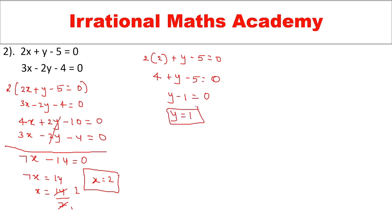Here 4 minus 5 is minus 1, so minus 1 plus y equal to 0, therefore y equal to 1. So I got x equal to 2 and y equal to 1. You can eliminate x also — it is not compulsory to eliminate y. As per your convenience you can choose. If you want to eliminate x, multiply the first equation by 3 and the second by 2 to equate the coefficients, then multiply one by minus to make them cancel.